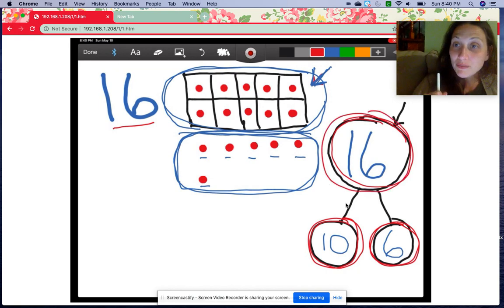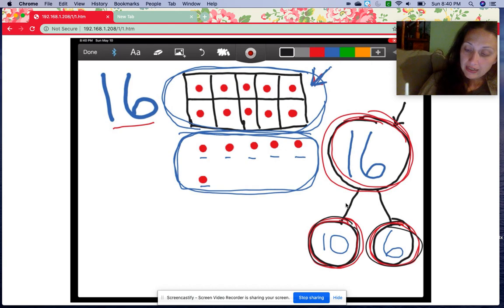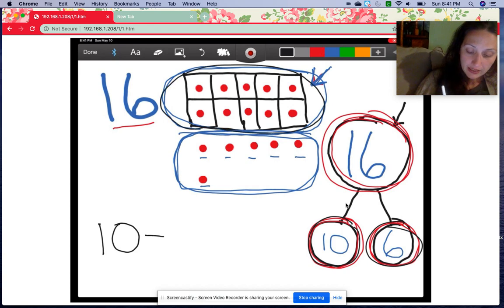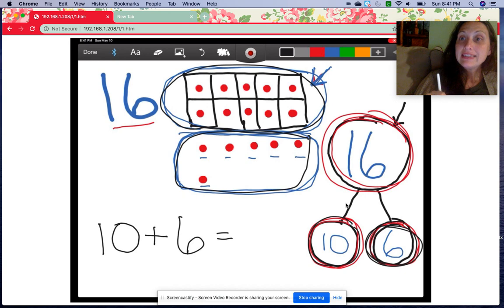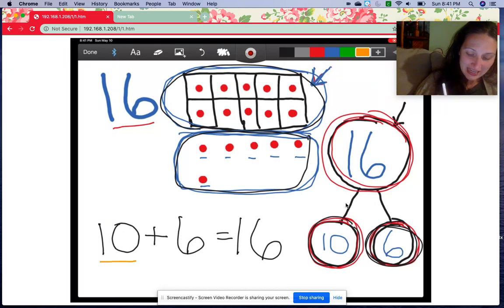And I can use those numbers to make a number sentence. So let's see. Part, part, whole. I need my first part is 10. This was the first part, 10 counters, plus my second part was this one, the number 6. And what is that equal to? 10 plus 6 equals, how many counters do we have all together? 16. It's very important for you to be able to read a number sentence. Will you go back and read this number sentence with me? Here we go. So, 10 plus 6 equals 16.